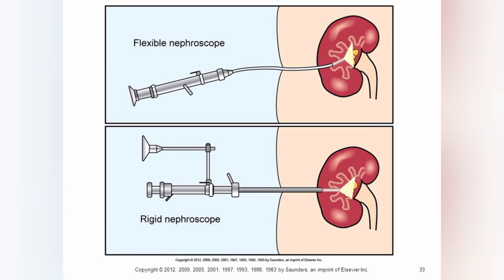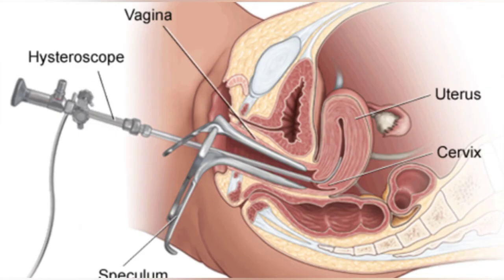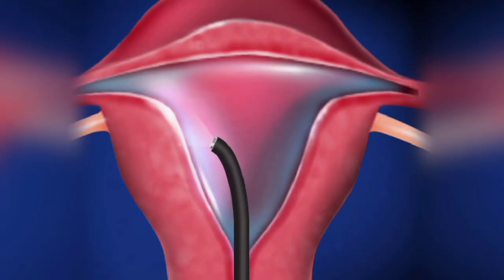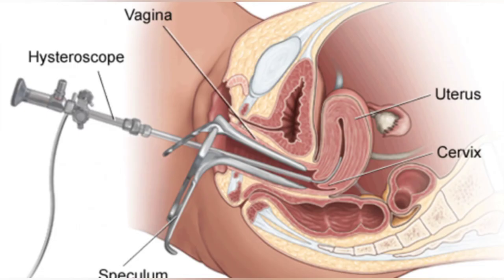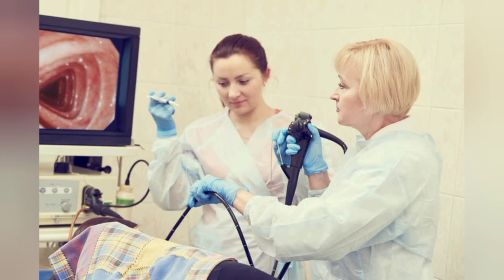Next, hysteroscopy is a procedure that helps doctors examine the inside of the uterus to diagnose and treat causes of abnormal bleeding. A flexible or rigid hysteroscope is inserted into the vagina to examine the cervix and inside of the uterus. Operative hysteroscopies are performed to remove polyps, fibroids, and adhesions.